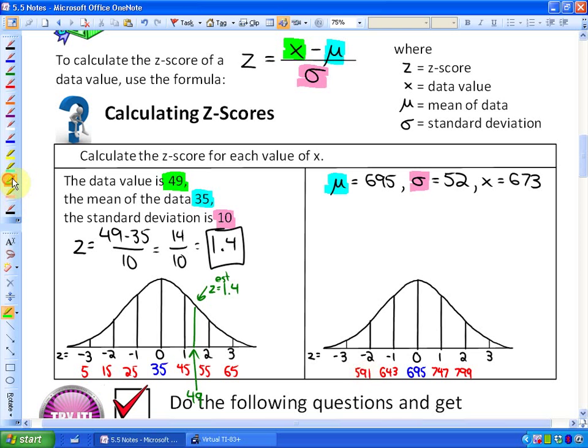So in this particular case, what we're asked to do is figure out the z-score for a data value of 673. So 673 is roughly a data value right there. So that would be a data value of 673.